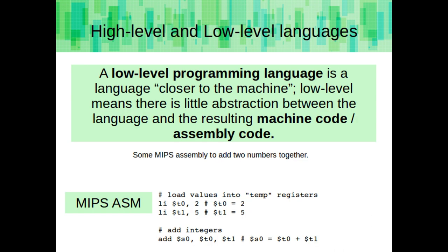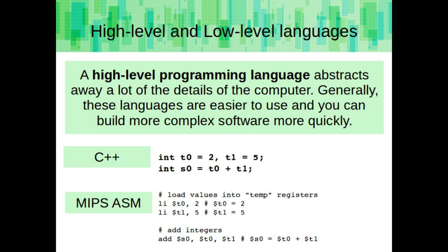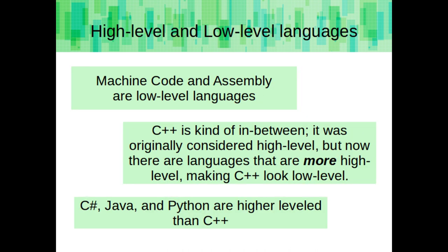Here's another example of some assembly code. The pound signs are for comments, telling you what each line does. A high-level programming language abstracts away a lot of the details of the computer. Generally, these languages are easier to use, and you can build more complex software more quickly. Machine code and assembly are low-level languages.